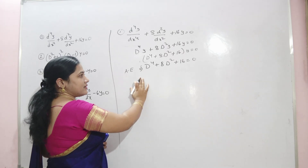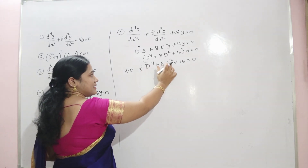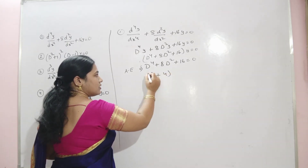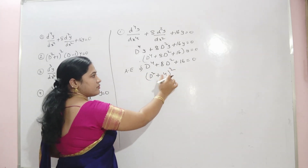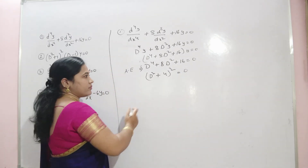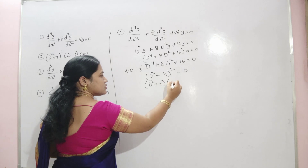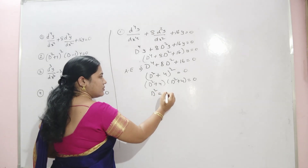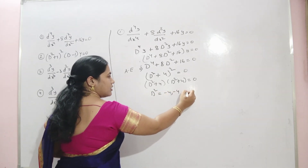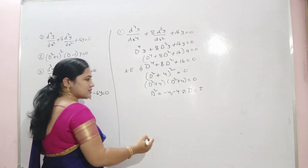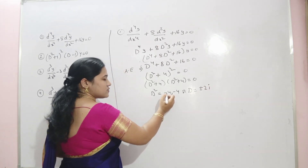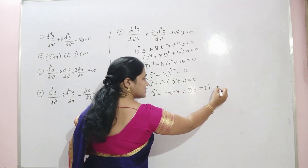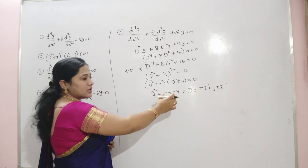Now find the roots for this auxiliary equation. D⁴ + 8D² + 16 factors as (D² + 4)², using the (a + b)² formula. So (D² + 4)² = 0, which gives D² = −4 and −4, therefore D = ±2i.